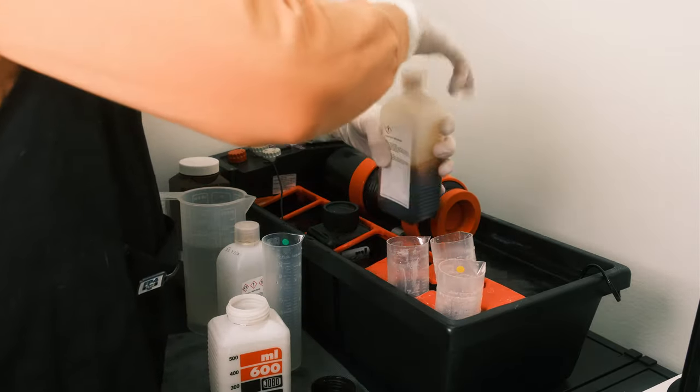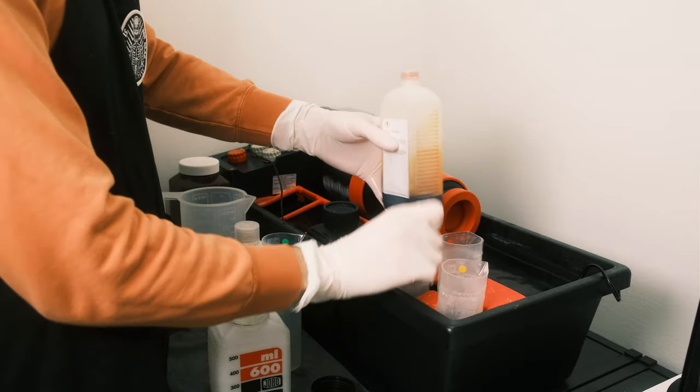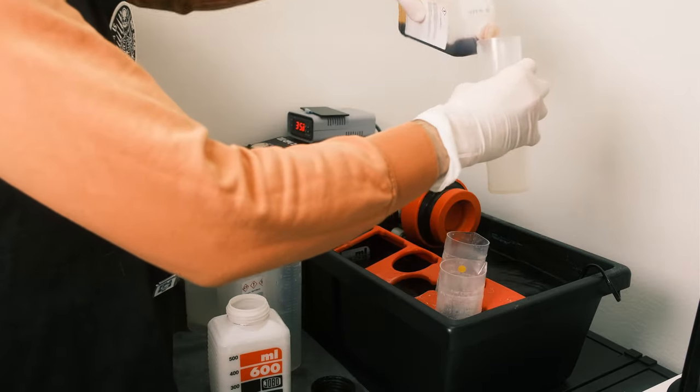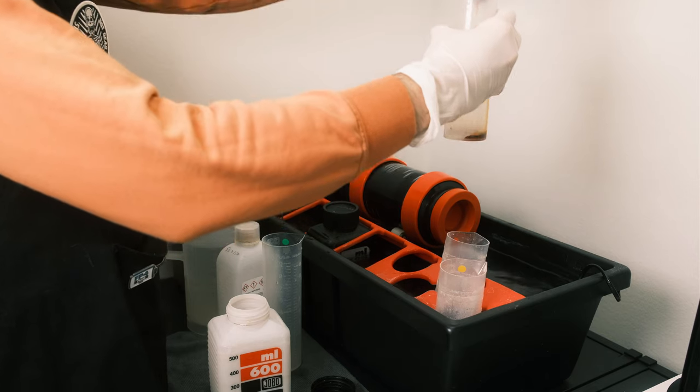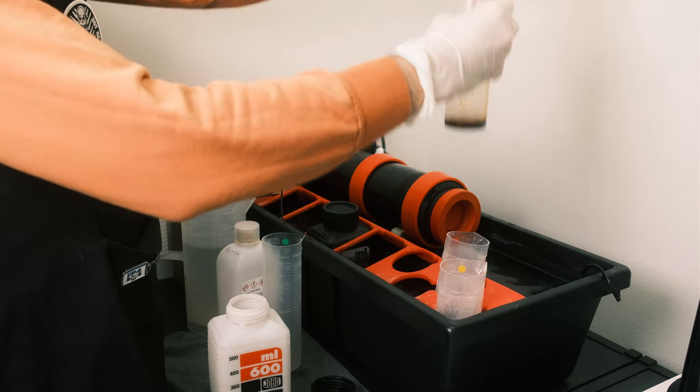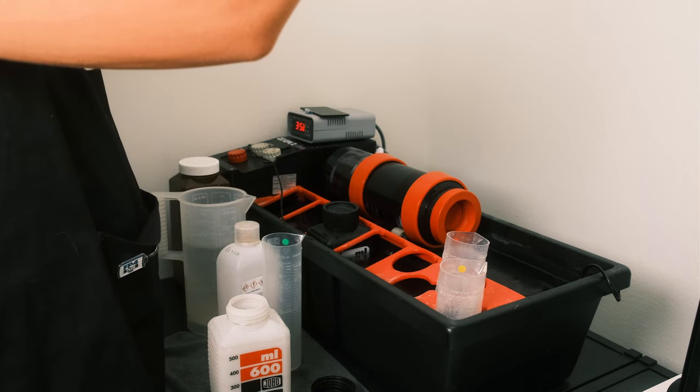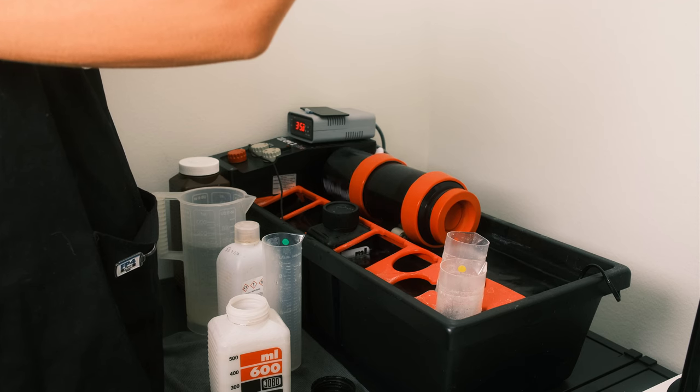Ratios for developer and bleach fix are exactly the same so I repeat the procedure in a different cylinder and dilute it and put it in the 600ml bottle and wait until both solutions heat up to the final temperature.